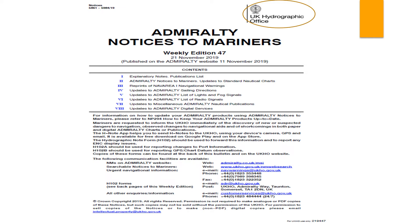These notices to mariners are issued on a weekly basis. There are also annual notices to mariners issued once a year, and cumulative notices to mariners issued once every two years, compiling all weekly information into one publication. The weekly publication ensures mariners are updated without waiting a year or two. Depending on how frequently your ship touches ports, you may receive it weekly, bi-weekly, or monthly.